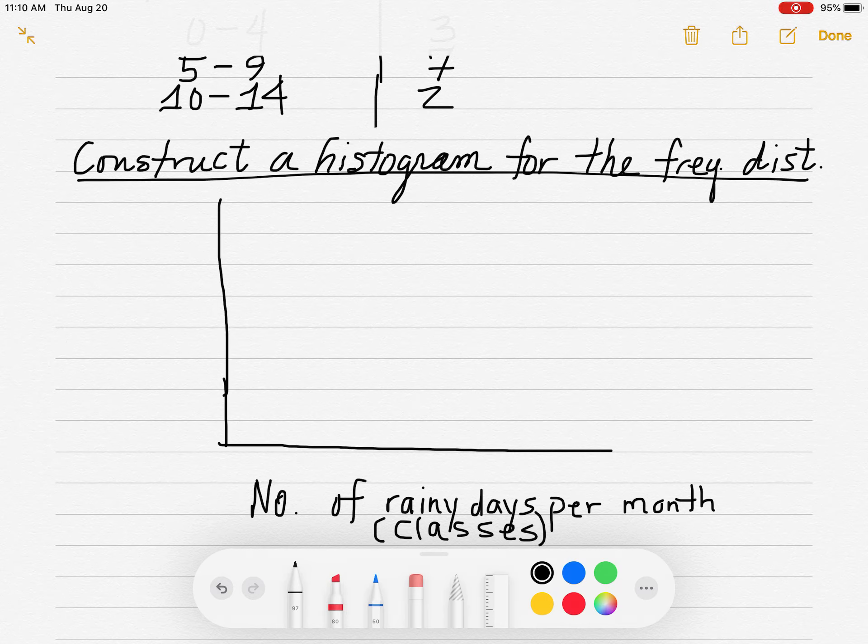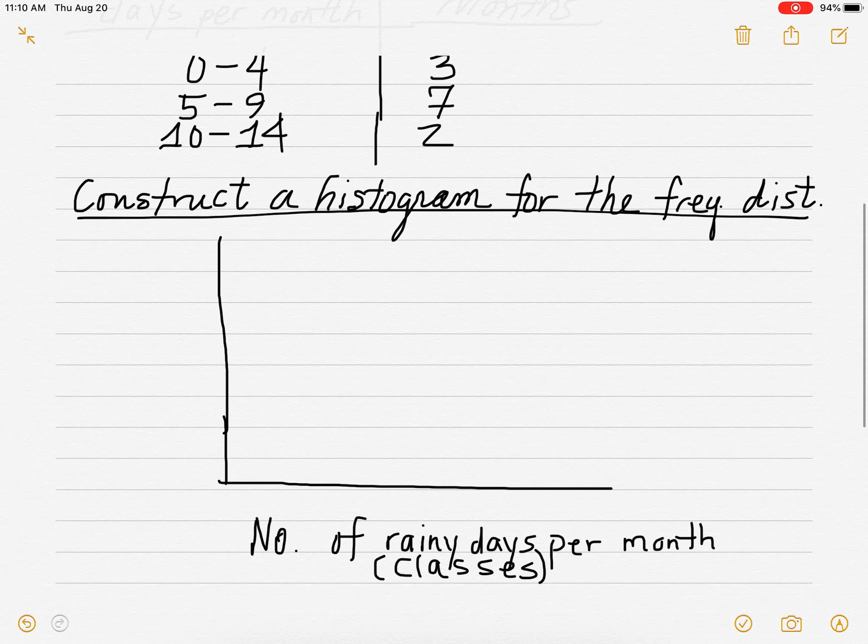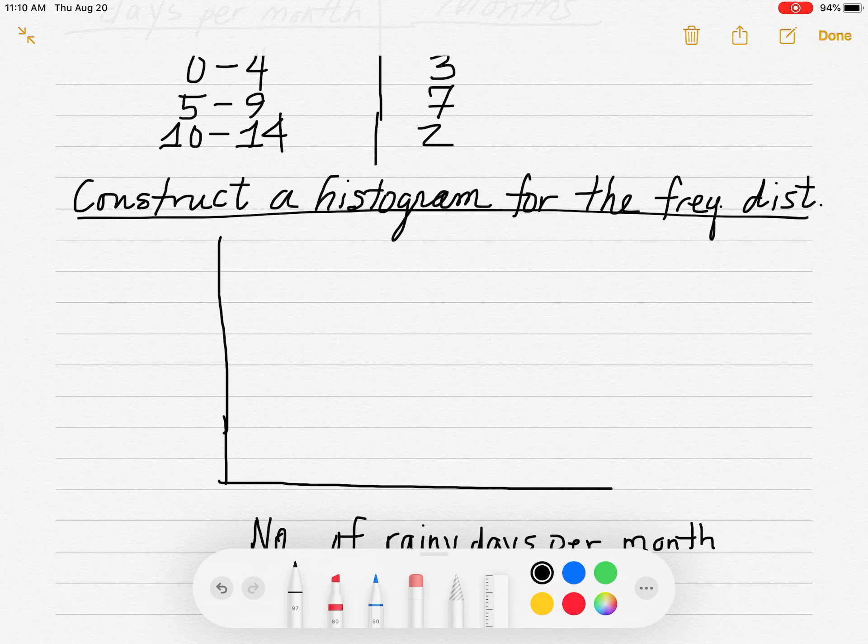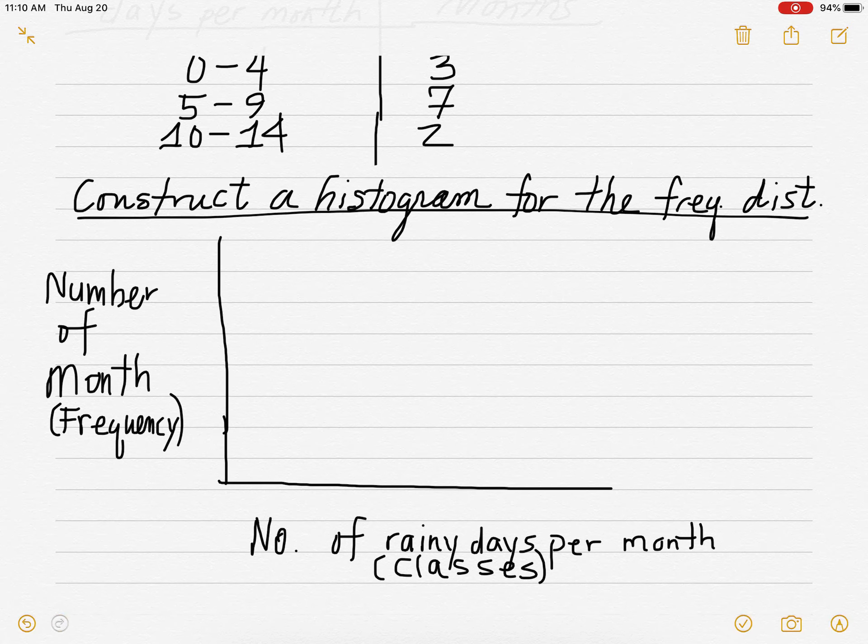And on the vertical axis, you're going to put your frequency, number of months in this case. So I'll just write down here, number of months. If I turn my iPad sideways, it's going to flip on me. So I'm just going to write number of months like this. These will be your frequencies. I'll write frequency in parentheses.